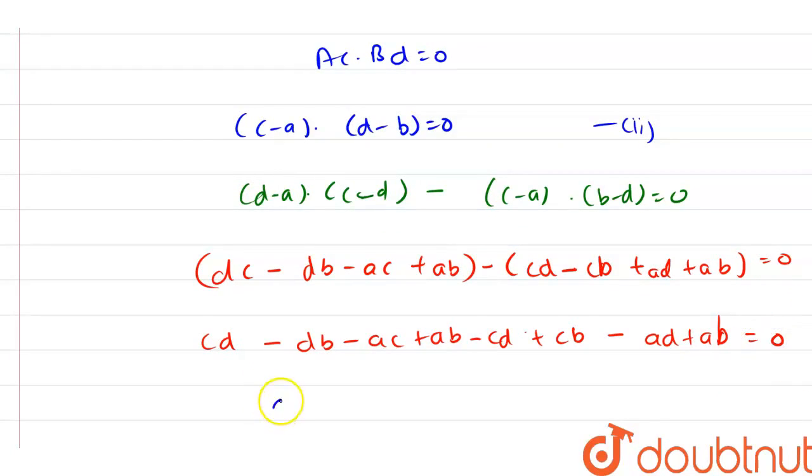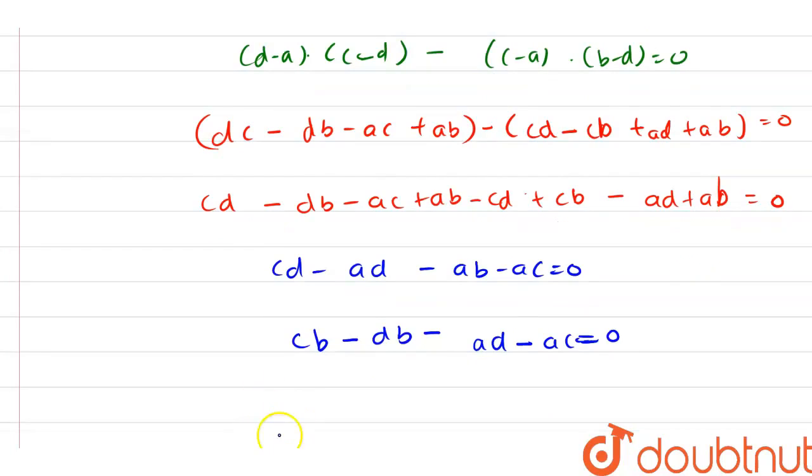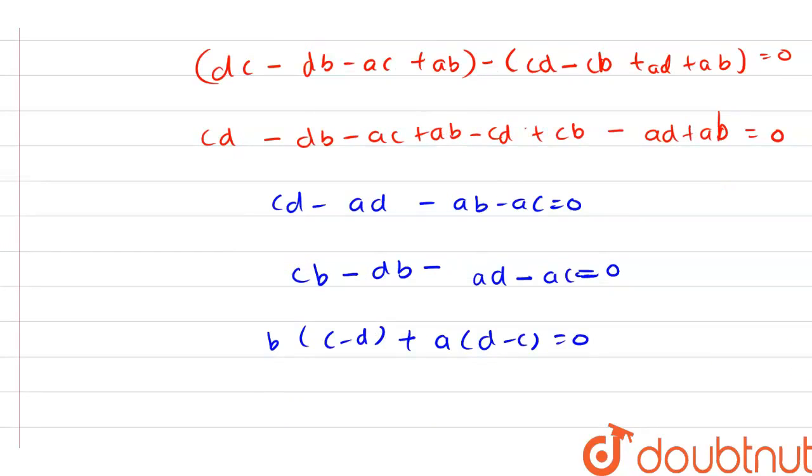From here we have CD minus DB, CD minus AD minus AB minus AC equals 0. Also, we have CB minus DB minus AD minus AC equals 0. From here we will take B common, so we have C minus D, and take A common, so we have D minus C, and that equals 0.